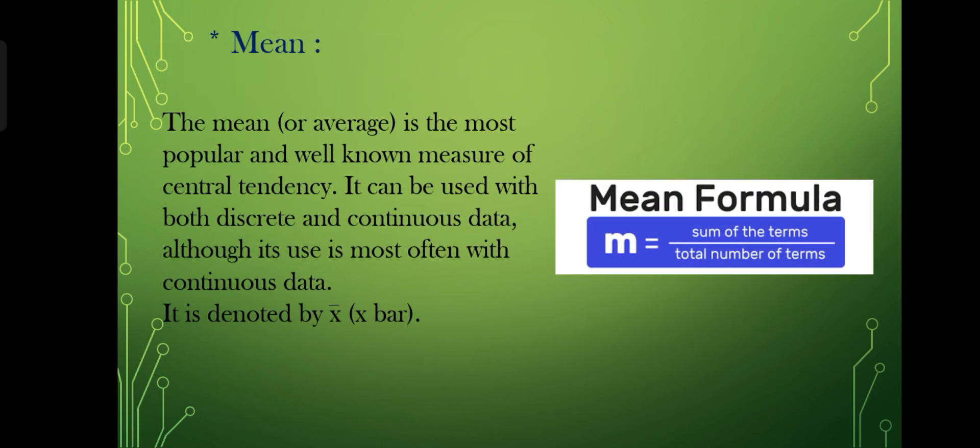The mean is the most popular and well-known measure of central tendency. It can be used with both discrete and continuous data, although its use is most often with continuous data. It is denoted by x bar.